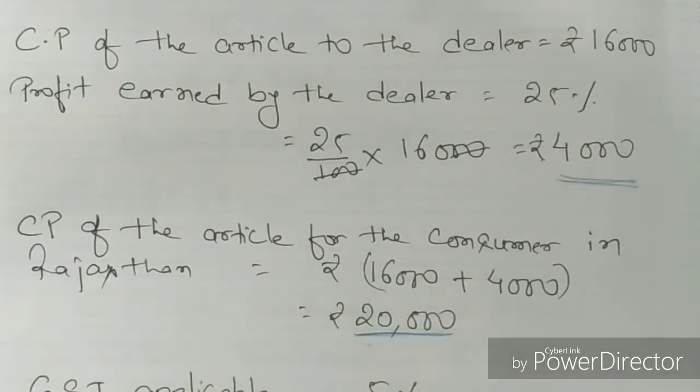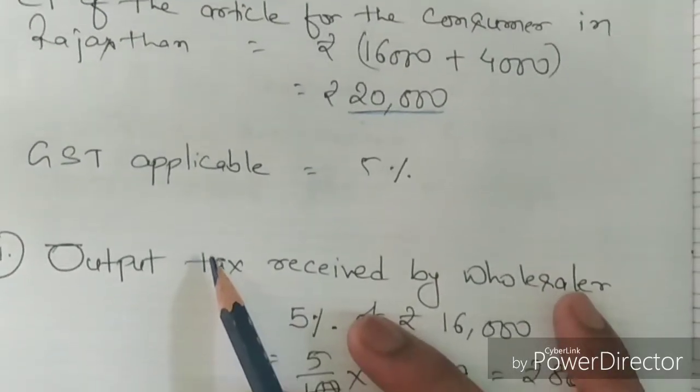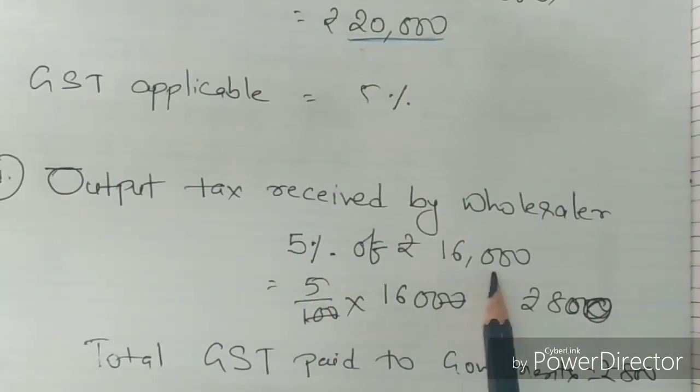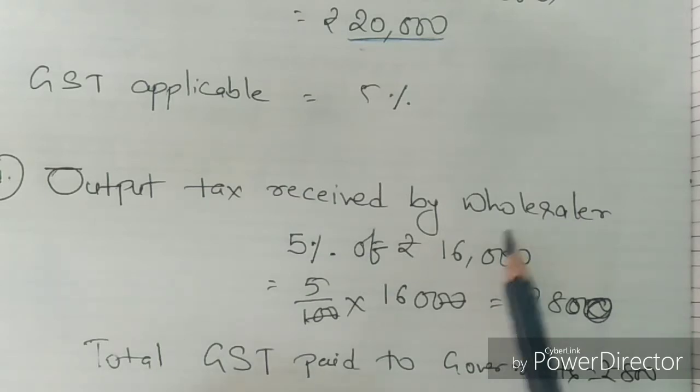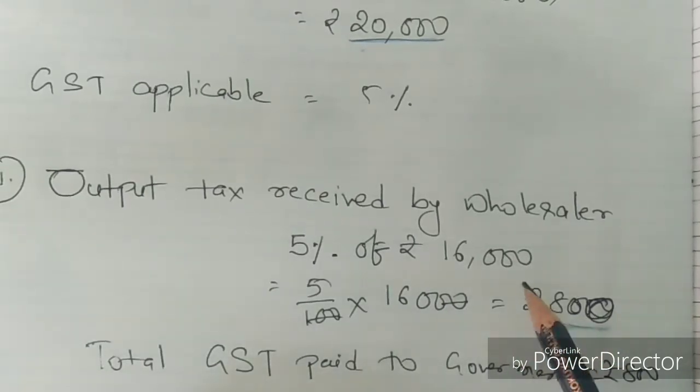So the first part is we have to find the tax paid by the wholesaler to the government. The output tax received by the wholesaler is 5% of 16,000, because the wholesaler sold the article to the dealer at Rs 16,000. So this is the total tax which the wholesaler will pay.